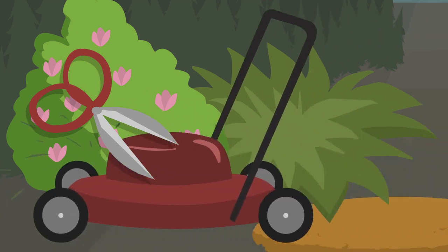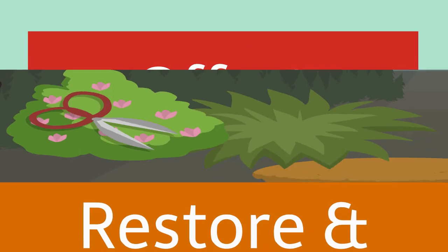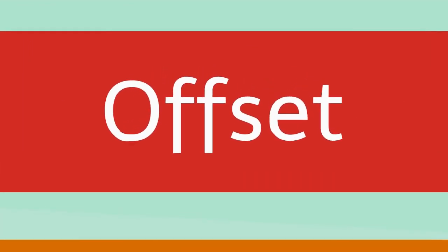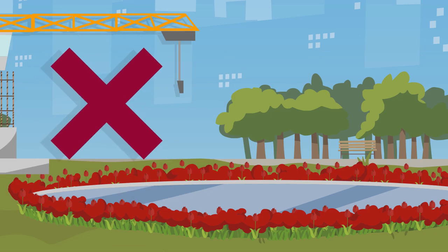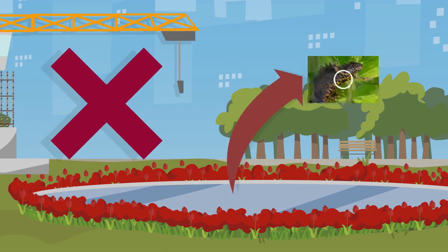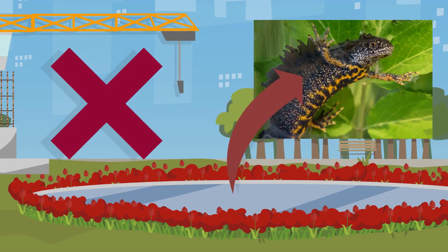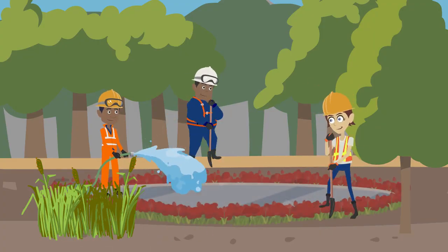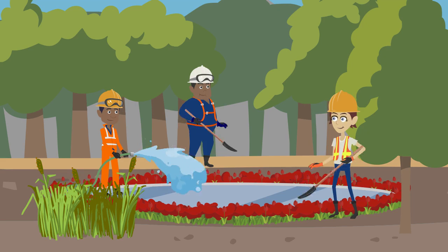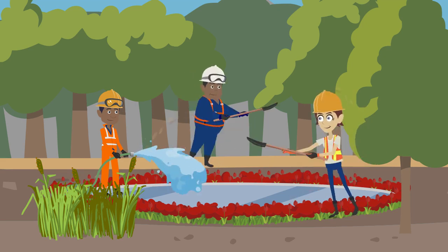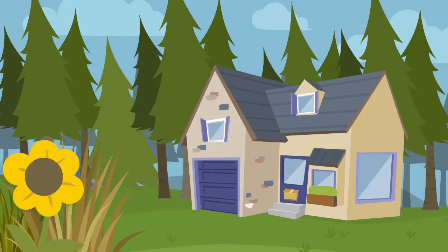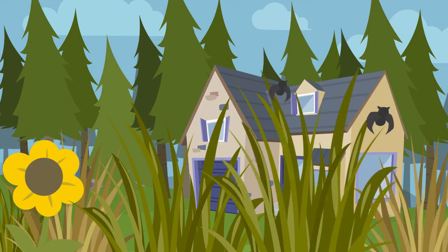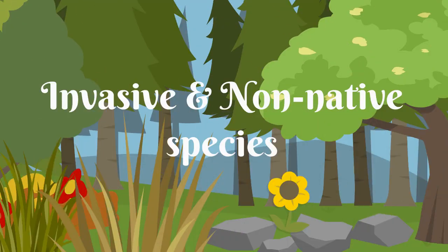Mitigation measures may also be constructed to compensate for habitat loss. For example, if you are working on a project which requires the removal of a wetland area with great crested newts in it, you may be involved in the construction of a new wetland habitat to mitigate the loss elsewhere on site. There are also some species you may encounter that can be detrimental to biodiversity or create problems for buildings — these are commonly referred to as non-native or invasive species.